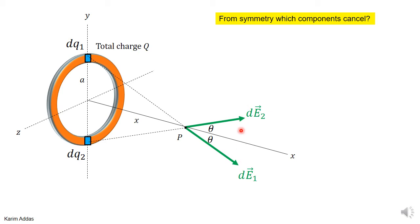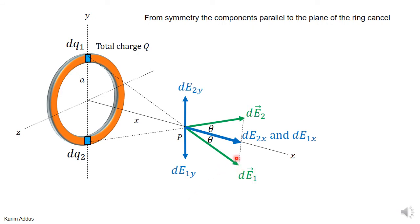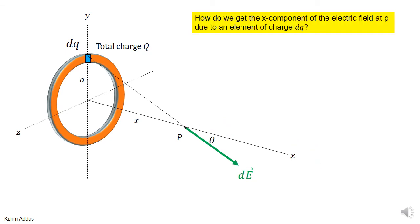Which components of these vectors will cancel and which will add? We can decompose each vector into an x-component and a y-component. Clearly the y-components — the ones parallel to the plane of the ring — are going to cancel. The components perpendicular to the ring, the x-components, are going to add up. So from the beginning we only need to find the x-component of the electric field.